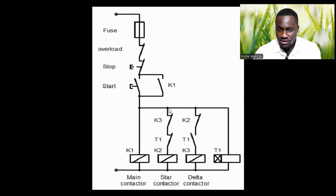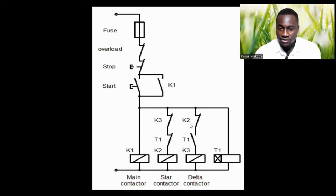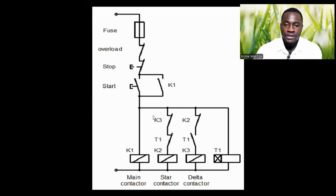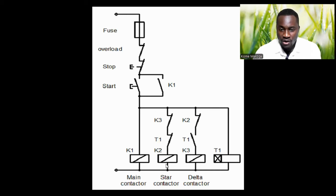Current also moves in this direction, gets to this point, and then moves to the timer, so the timer coil will energize. At the same time, current gets to this point but is not able to move down because this contact is a normally open contact. It gets to the closed contact K3, moves down, gets to the normally closed contact of timer T1, still moves down and gets to the level of coil K2 — the star contactor. So at this point the star contactor coil is energized, enabling the motor to operate in star.